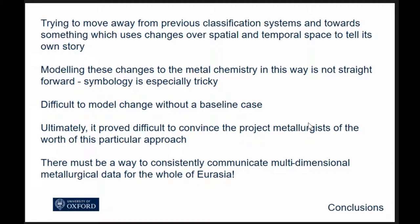We're trying to move away from a very rigid classification system and look more at the changes over time and space, allowing the data to tell its own story. But we find that this particular case is really difficult. We came up with a way to model the metal chemistry but it wasn't straightforward - difficult to symbolize. I can look at that data and see patterns and know that there is information in there, but I find it very hard to find a way to show that in a way that I understand, in a way that's acceptable to the metallurgists, in a way that non-specialists would be interested in. Where do you start if you're looking at change? If you don't have a starting case, how do you measure change?